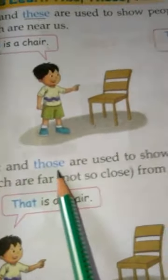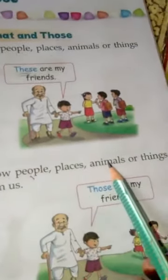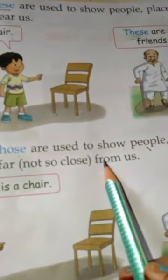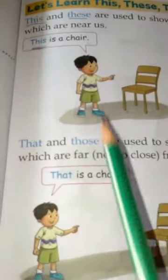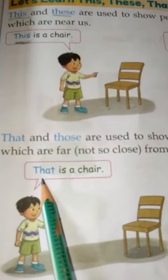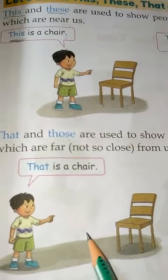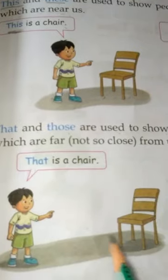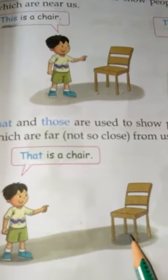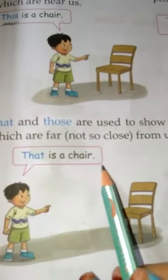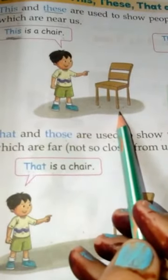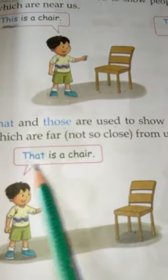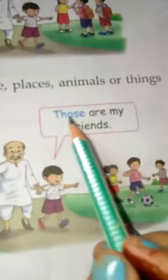That and those are used to show people, places, animals or things which are far, not so close from us. 'That' कहाँ use करेंगे — जो one thing होगी और वो हमारे close नहीं होगी, हमसे थोड़ा दूर होगी, singular होगी, तो we will use 'that.' For example: that is a chair. Those are my friends — when many friends are far from us.